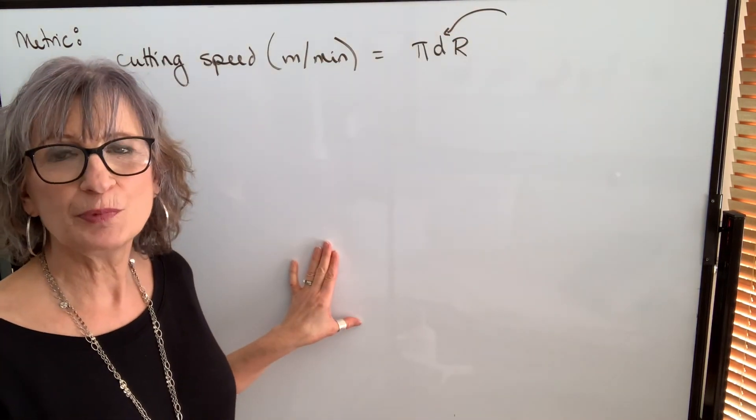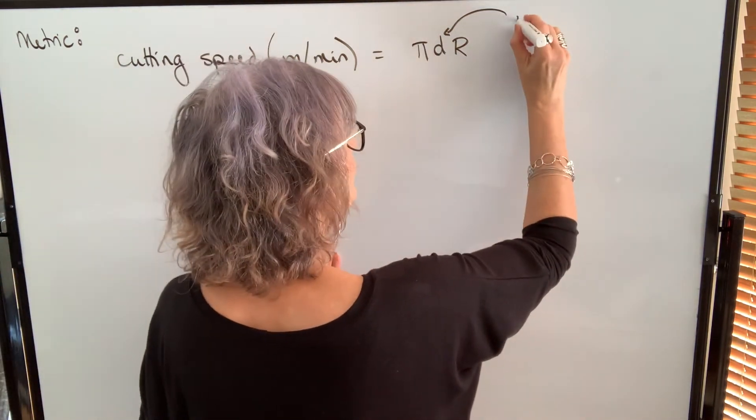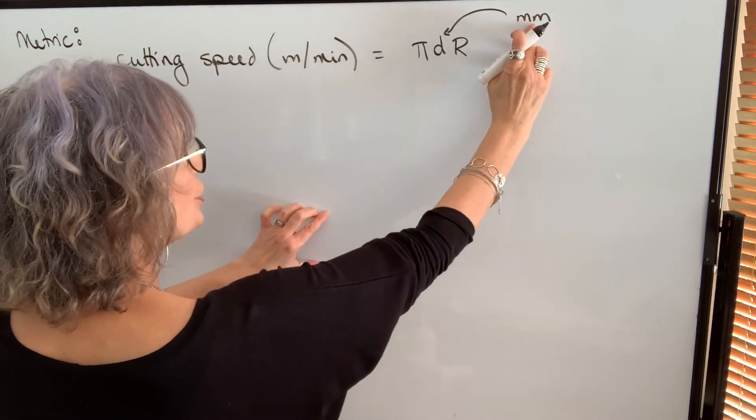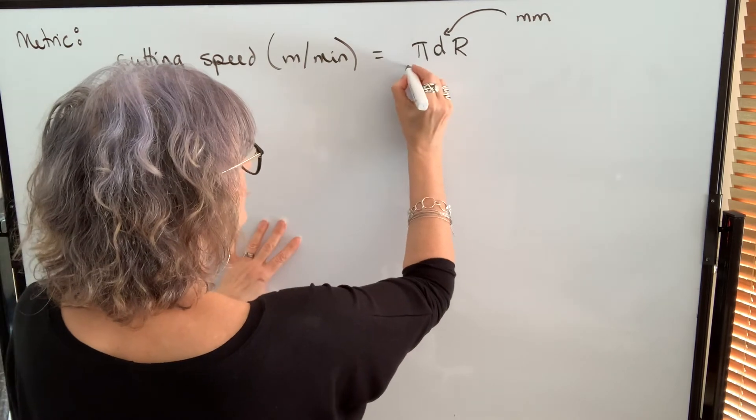To find that distance in a minute, we multiply by the number of revolutions per minute. Usually your diameter will be measured in millimeters. So in order to change millimeters to meters, we need to divide by 1,000.